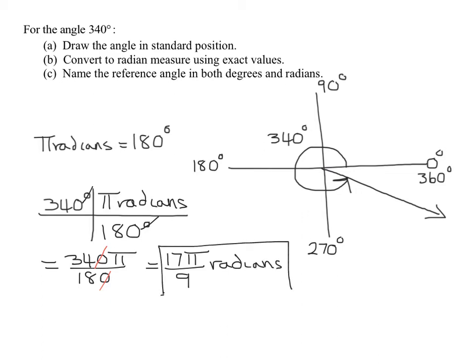Do we need to write radians? No. If there's nothing there, it's assumed to be radians. Now we need to find reference angles. Remember, the reference angle is the acute angle between the x-axis and the terminal side. So here is our reference angle, this angle in here.